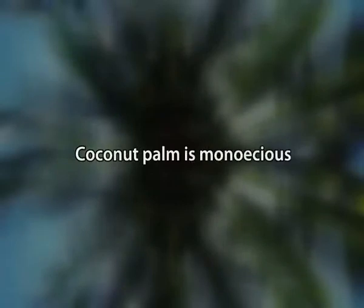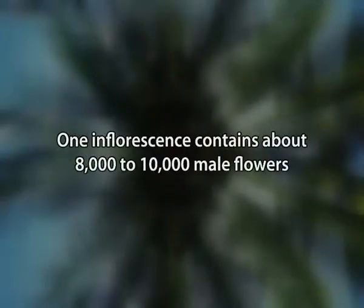The coconut palm is monoecious, that is, producing both male and female flowers on the same inflorescence. The male flowers are more numerous than the female flowers. There are about eight thousand to ten thousand male flowers per inflorescence. The male flowers are borne on the top portion of the spikelets, which are attached to the main axis or pedicel. The female flowers are situated at the base of the spikelets.